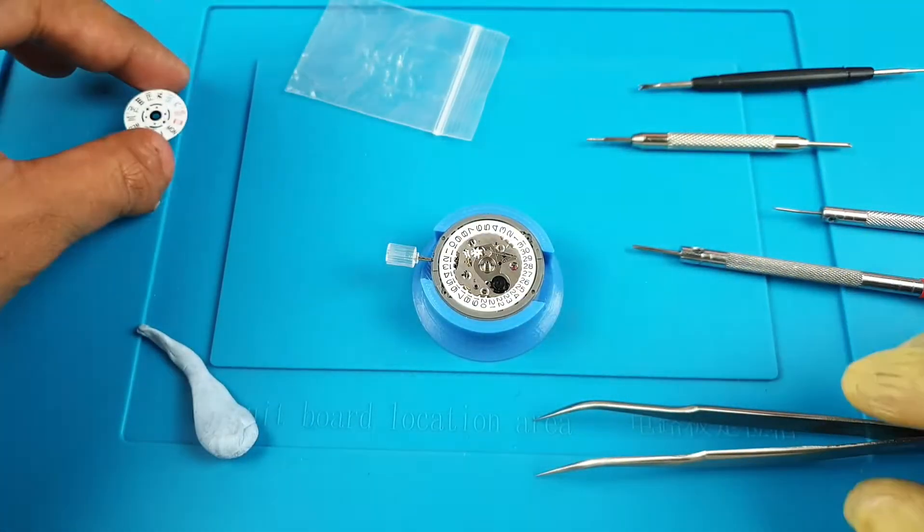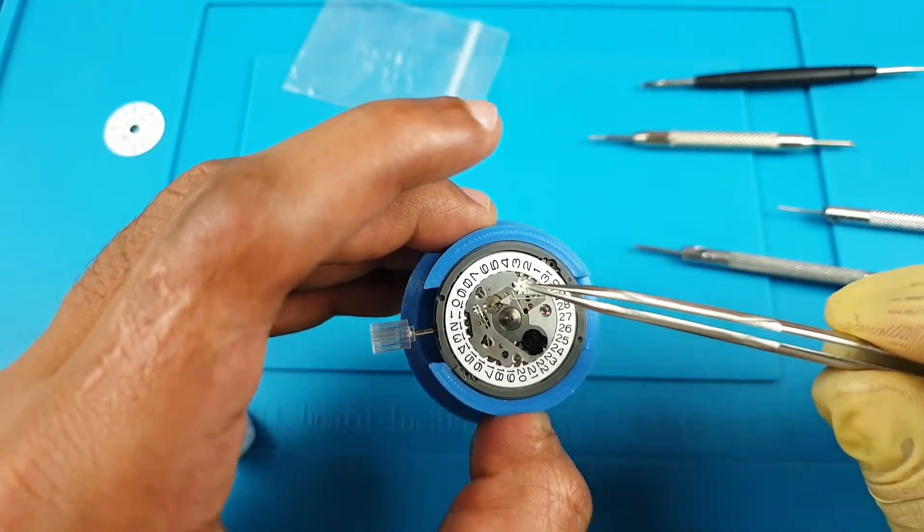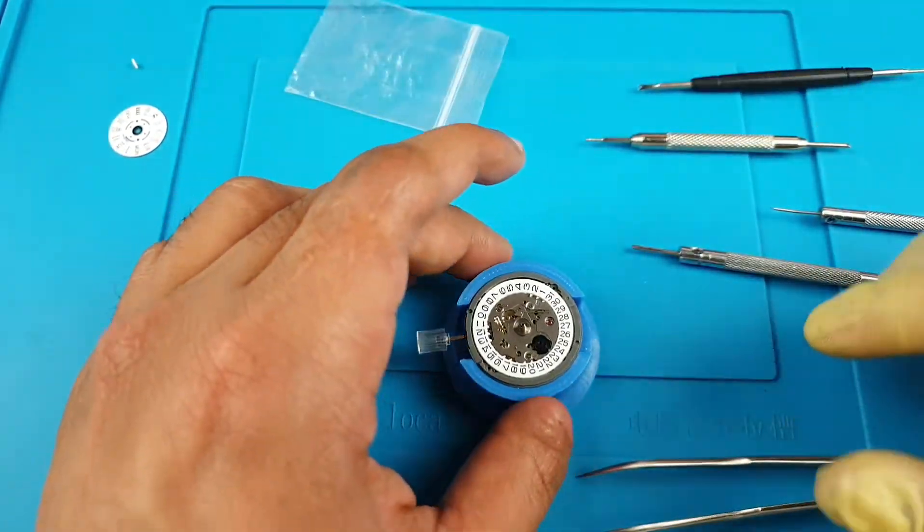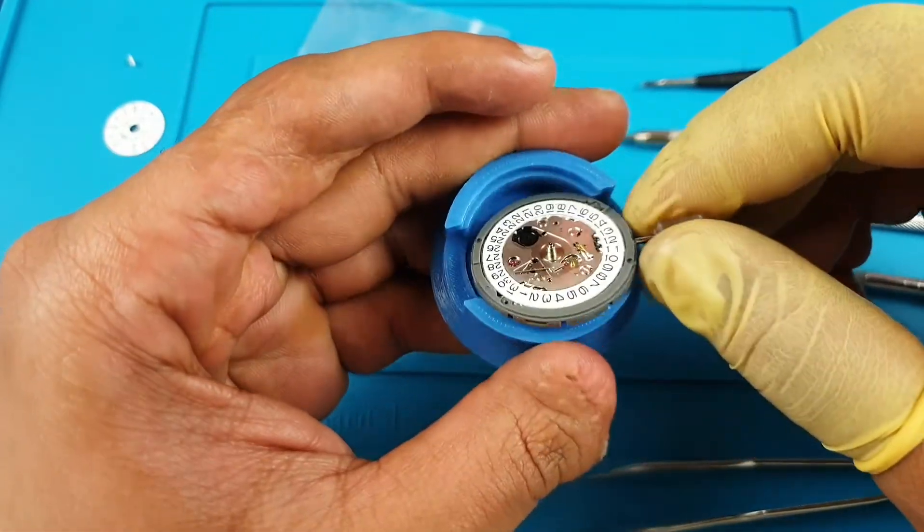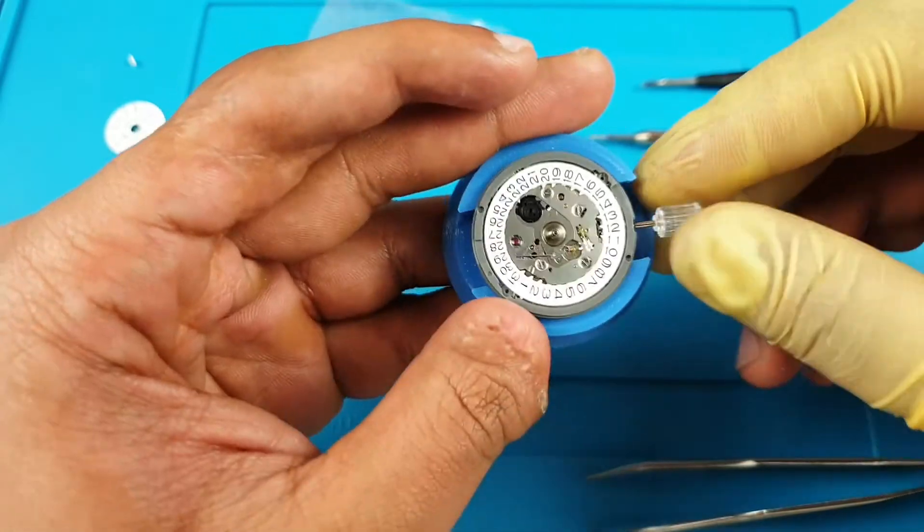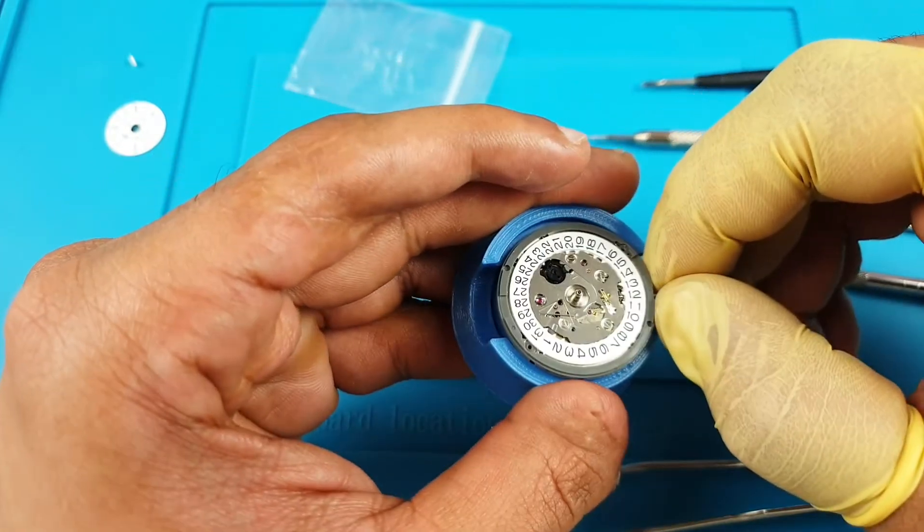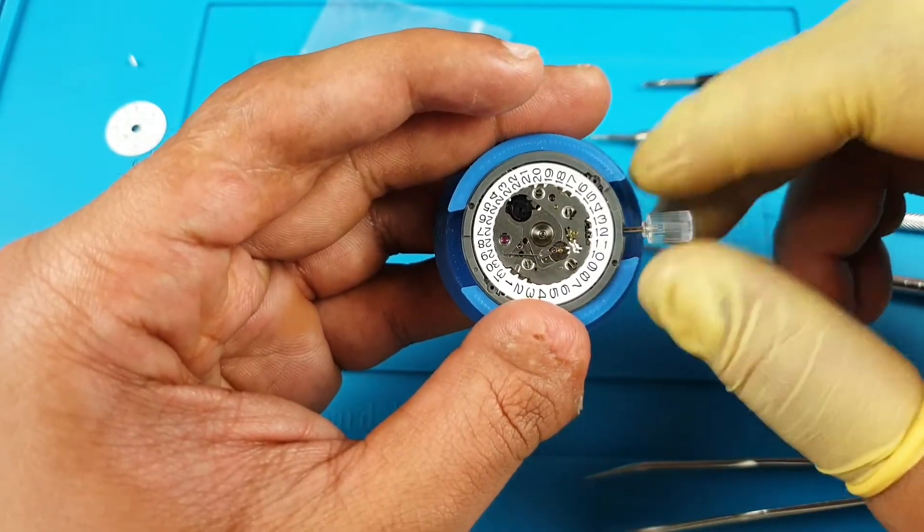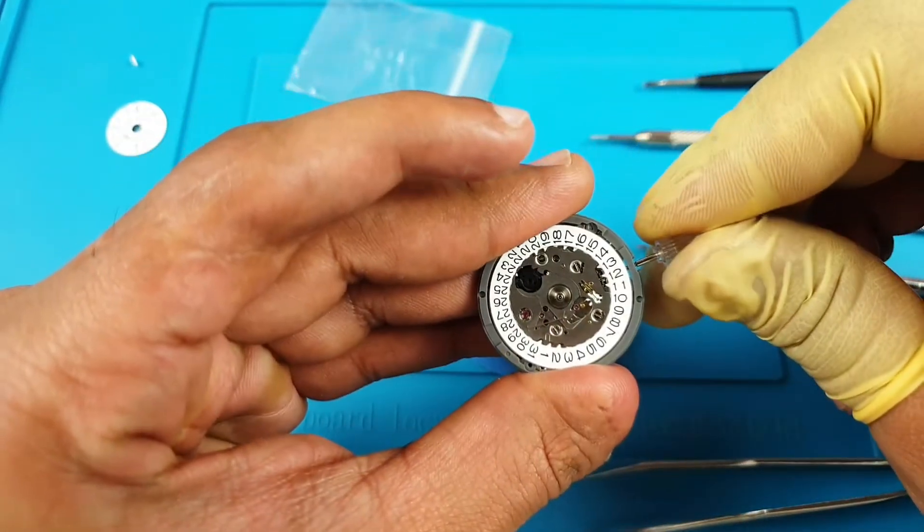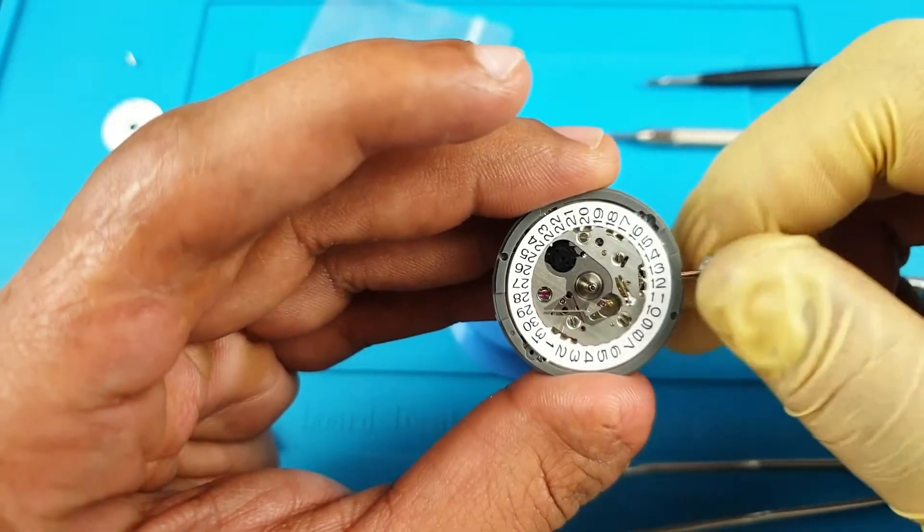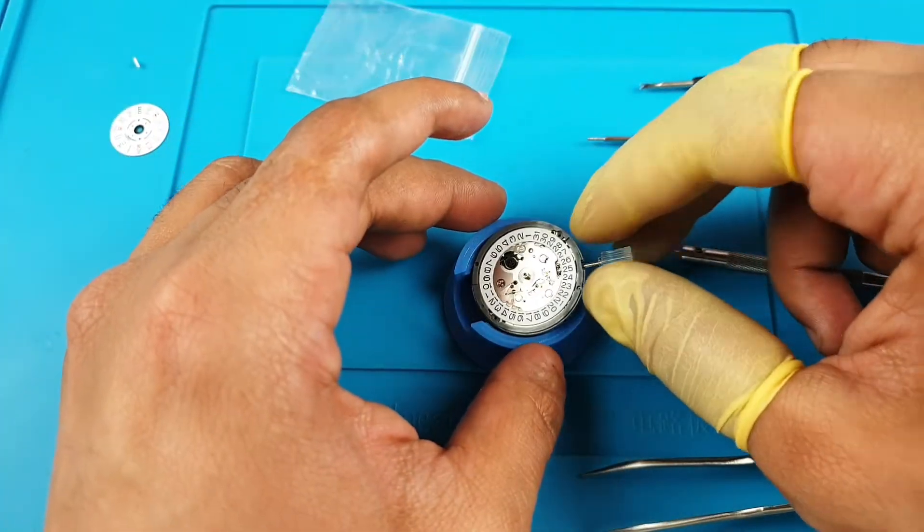So you'll see this small wheel here which is the day change wheel. Now you can just remove that, put it to the side. Now what you have done effectively, you've turned this movement into an NH35. This is why I say if you want to buy a movement, buy the NH36s because you can easily just remove that, convert to NH35s. And you can't go the other way around. You can't go from NH35 to an NH36 due to the cannon pinion, slightly different shape, slightly different height, which doesn't allow a day disc to be fitted on.